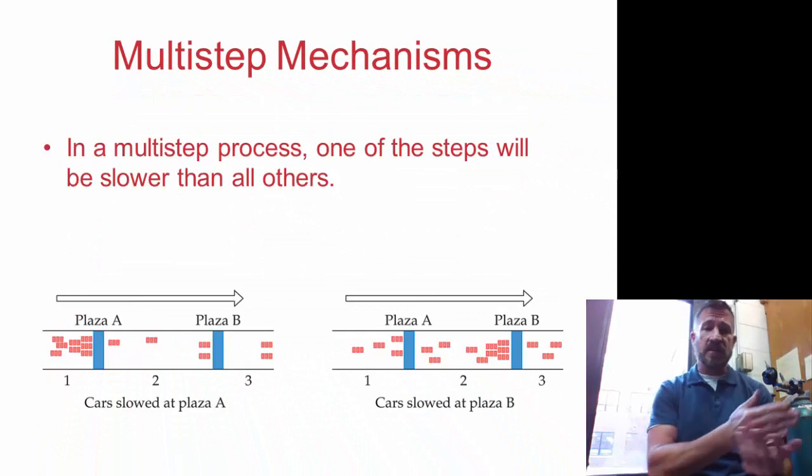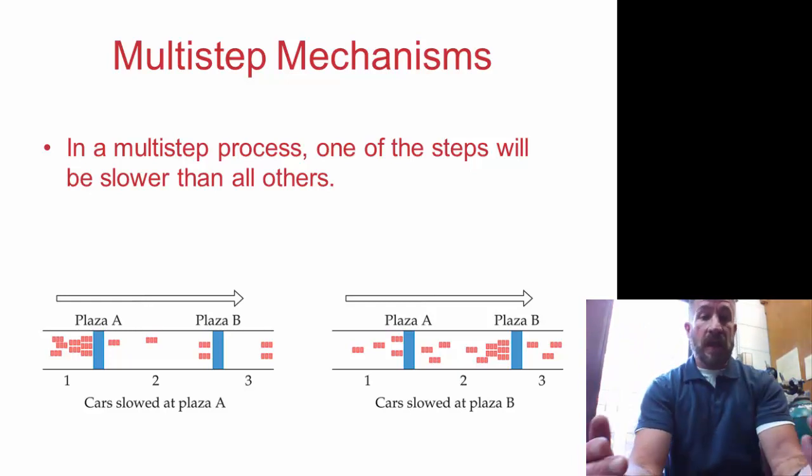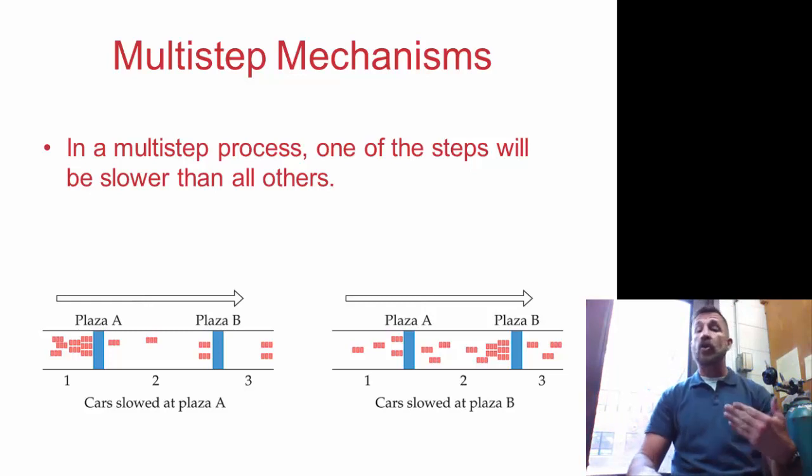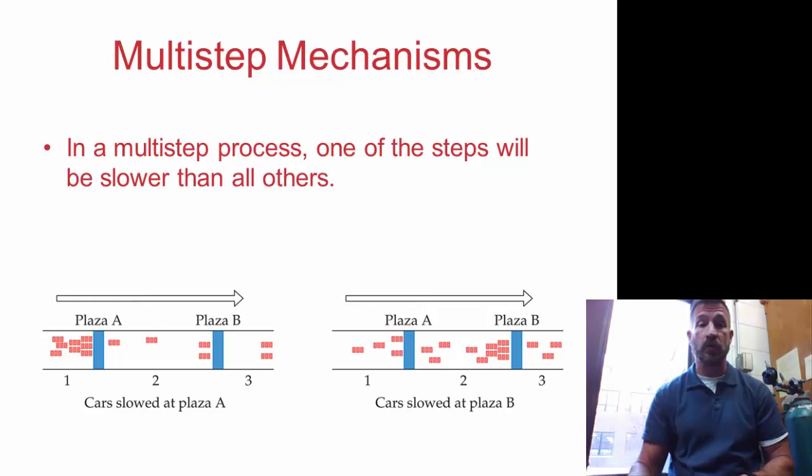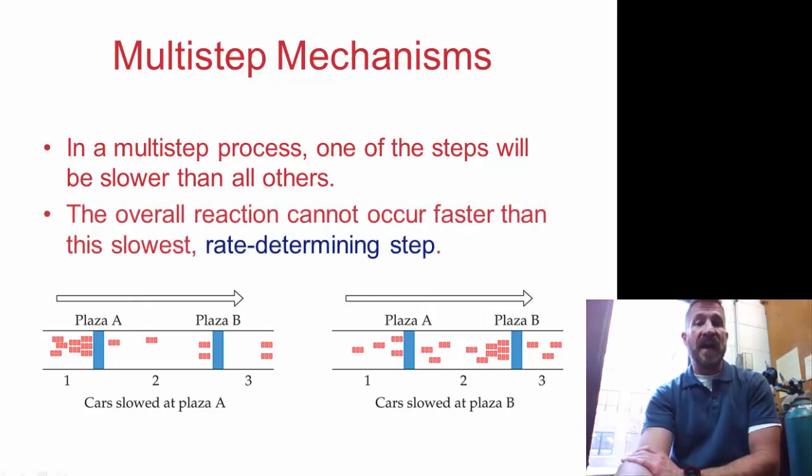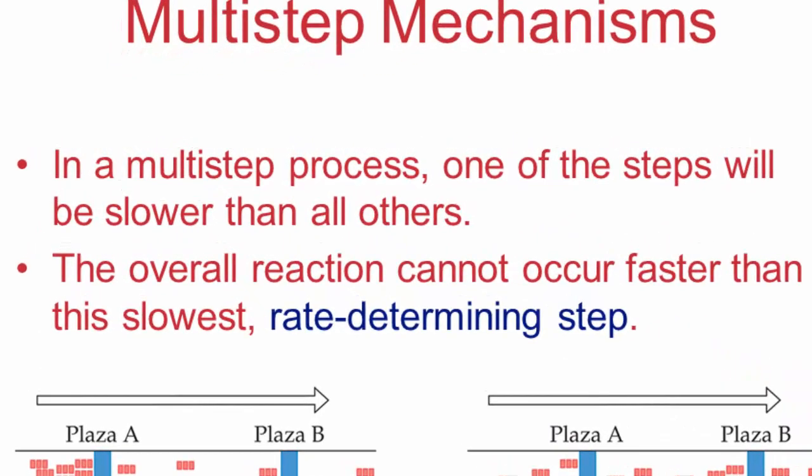So reactions are multi-step. You can think about it as a car driving down a road. Let's say there's a plaza and at one point it slows. Well, traffic can never go any slower or faster than the slowest portion where it stopped. And the same is true for reactions. The overall reaction cannot occur faster than the slowest step, and we call this slowest step - and this is very important - the rate determining step. So once again, the slowest step is called the rate determining step because regardless of how fast the other steps are, you can never go faster than the slowest step of the reaction.